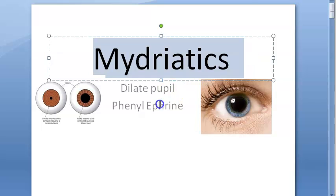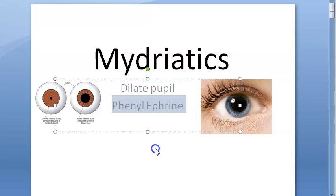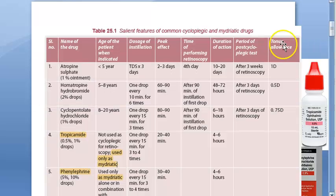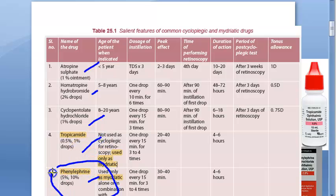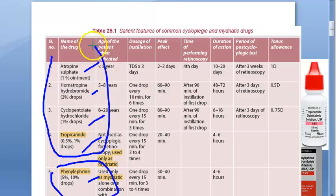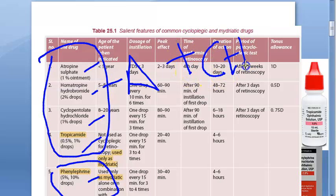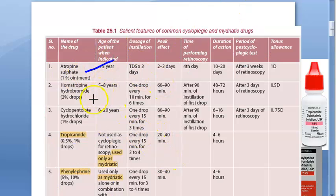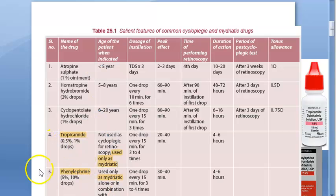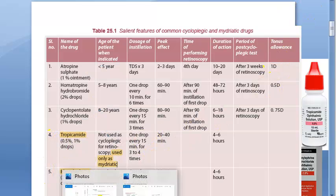An example of a mydriatic agent for the eye is phenylephrine. Here are some common cycloplegics and mydriatic drugs: atropine, homatropine, cyclopentolate, tropicamide, and phenylephrine. Phenylephrine is used only as a mydriatic. The other four — atropine, homatropine, cyclopentolate, tropicamide — are all anti-muscarinic and have both cycloplegic and mydriatic action, though tropicamide has very little cycloplegic action. So the best cycloplegics are atropine, homatropine, and cyclopentolate, while tropicamide and phenylephrine are considered mydriatics.